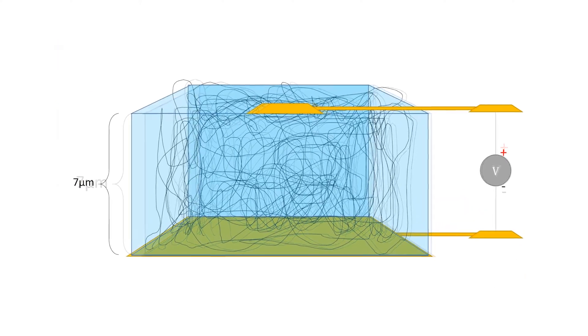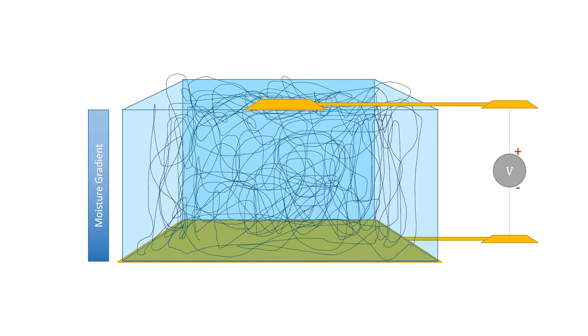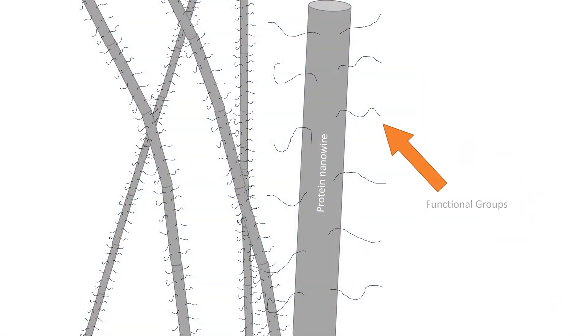The driving force behind the device was a self-maintained and regenerative moisture gradient, which through interactions with hydrophilic functional groups on the surface of nanowires, produced an electric potential throughout the film.